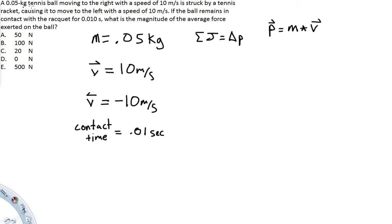A 0.05 kg tennis ball is moving to the right with a speed of 10 meters per second. It is struck by a tennis racket causing it to move to the left at a speed of 10 meters per second. If the ball remains in contact with the racket for 0.01 seconds, what is the magnitude of the average force exerted on the ball?